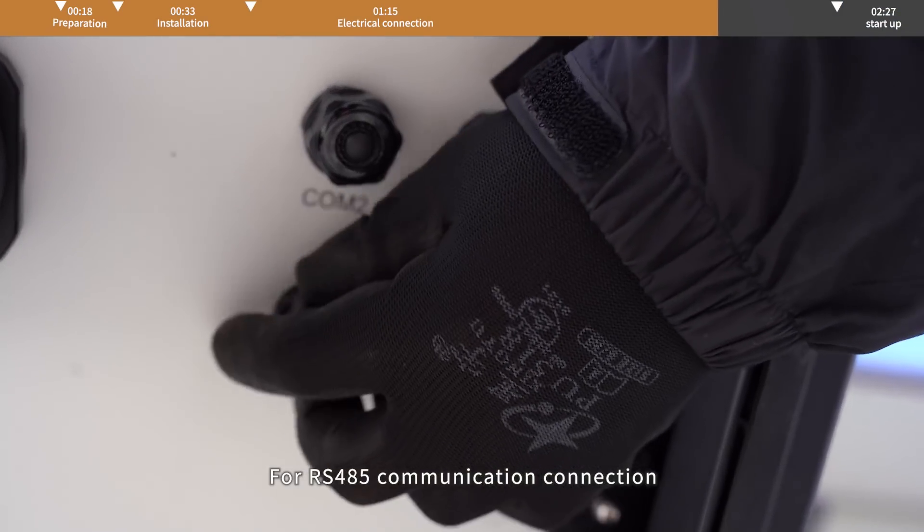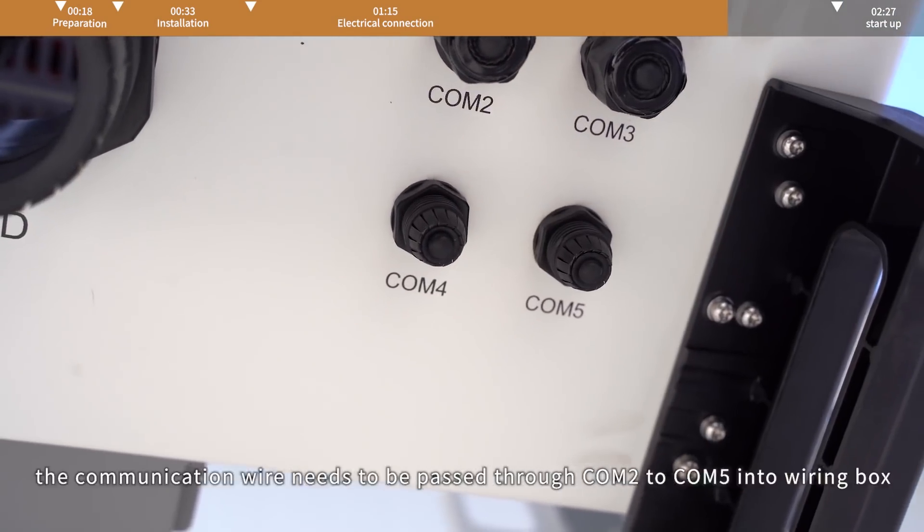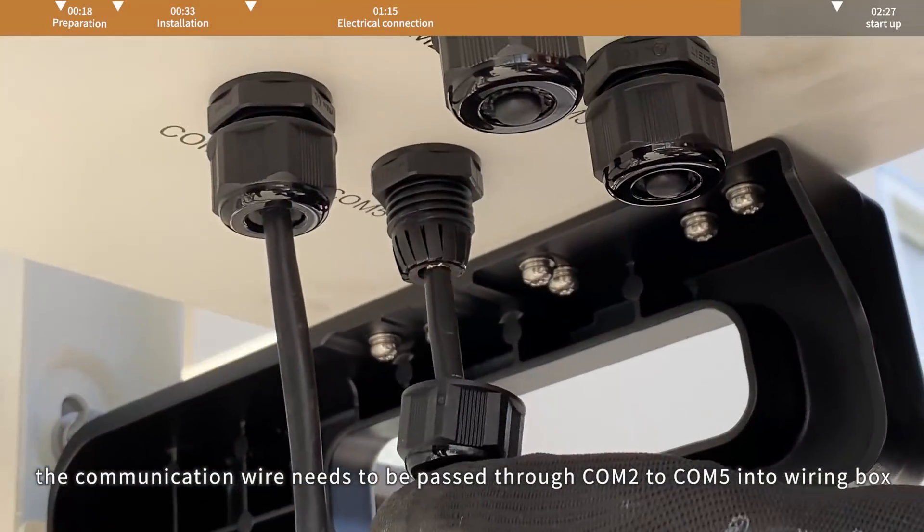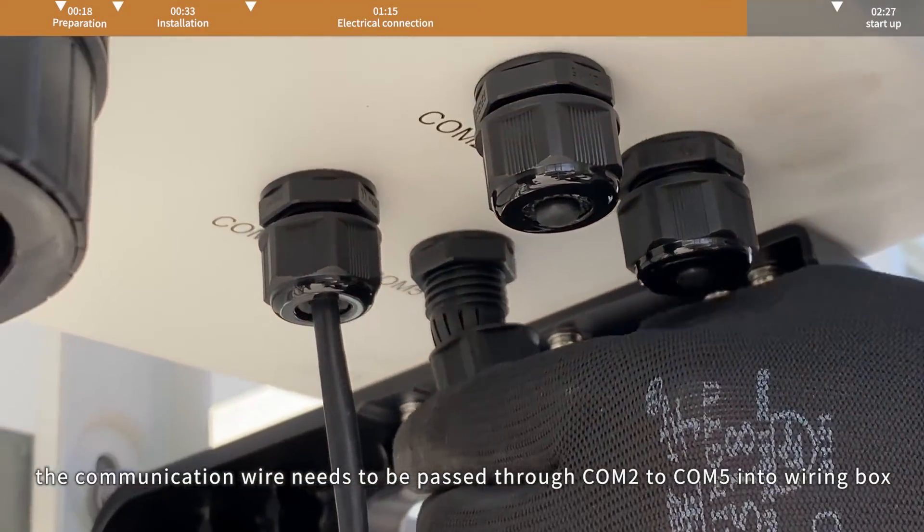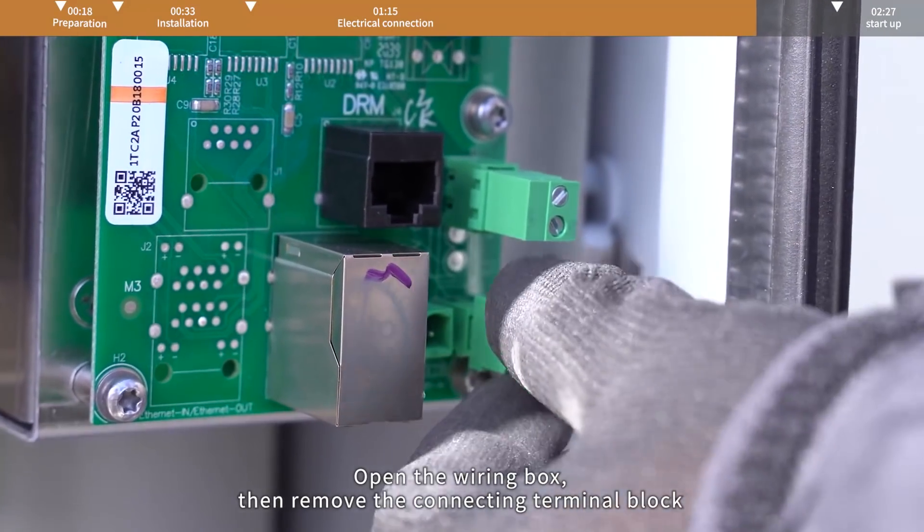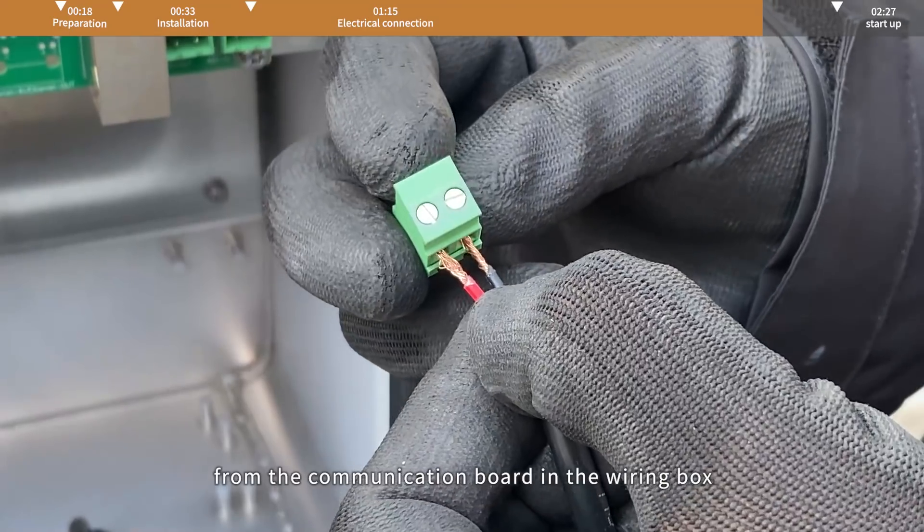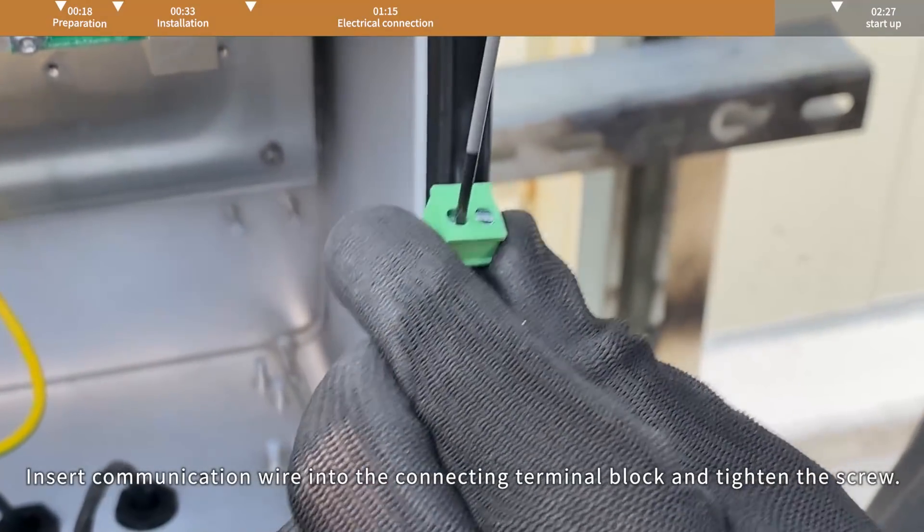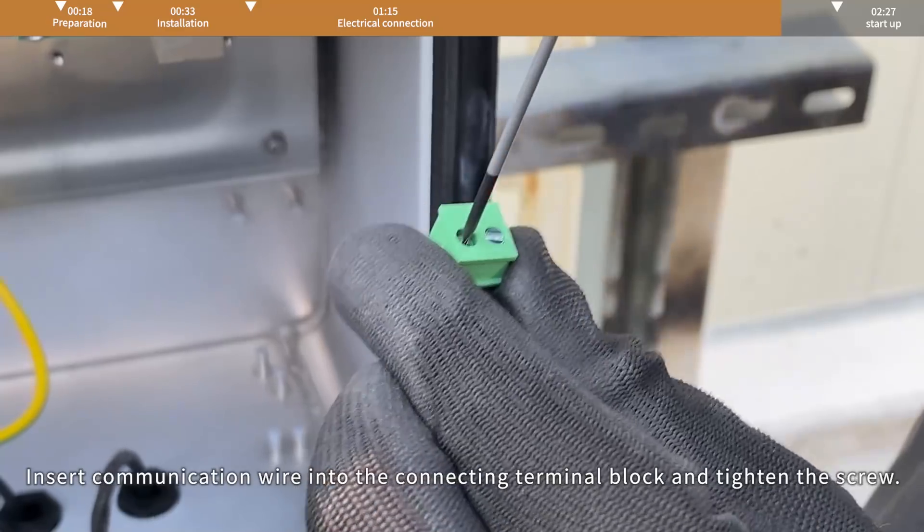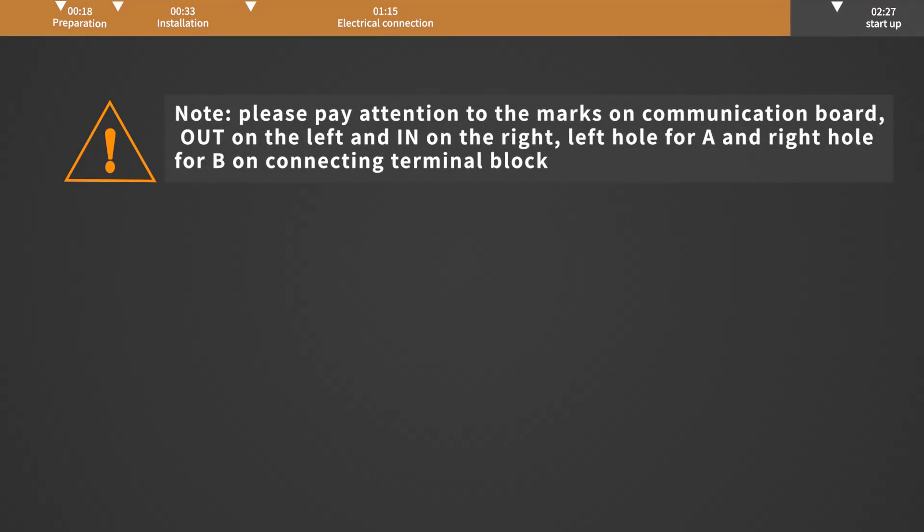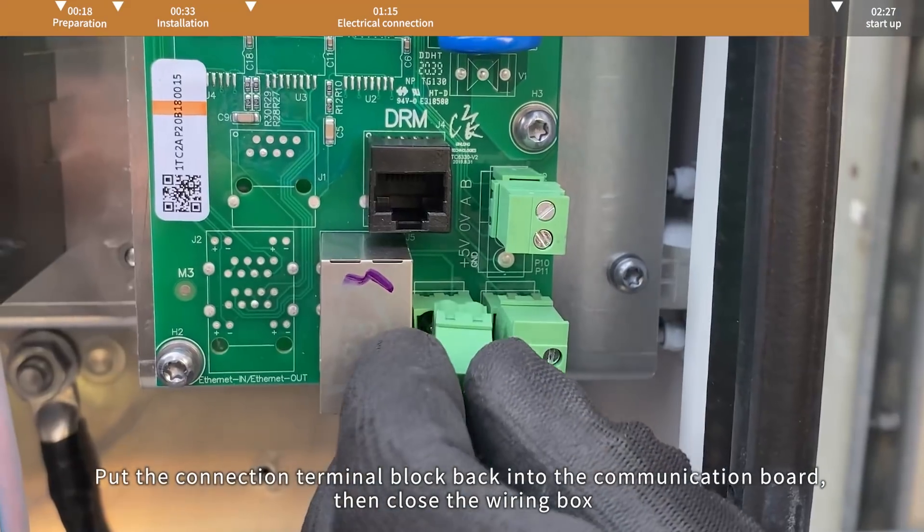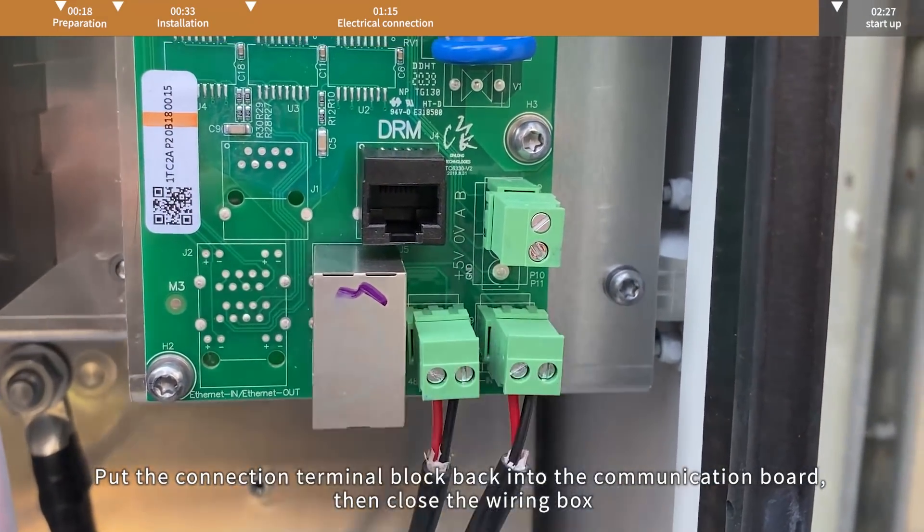For RS-485 communication connection, the communication wire needs to be passed through COM2 to COM5 into the wiring box. Open the wiring box, then remove the connecting terminal block from the communication board. Insert communication wire into the connecting terminal block and tighten the screw. Put the connection terminal block back into the communication board, then close the wiring box.